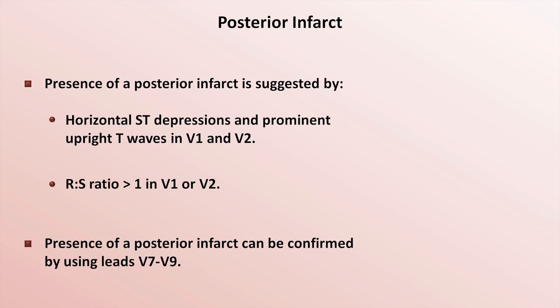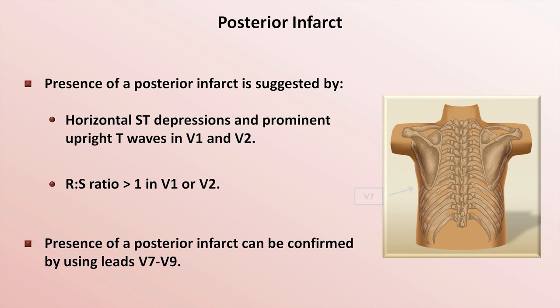The presence of a posterior infarct can be confirmed by using the unconventional posterior EKG leads V7 through V9. Looking at the patient's back, V7 is placed in the posterior axillary line in the same horizontal plane as V6, V8 is placed at the tip of the scapula in the same horizontal plane as V6, and V9 is in the left paraspinal region, also in the same horizontal plane. When recording the EKG, it is most common for V7 through V9 to take the place of V4 through V6 on the actual paper printout.